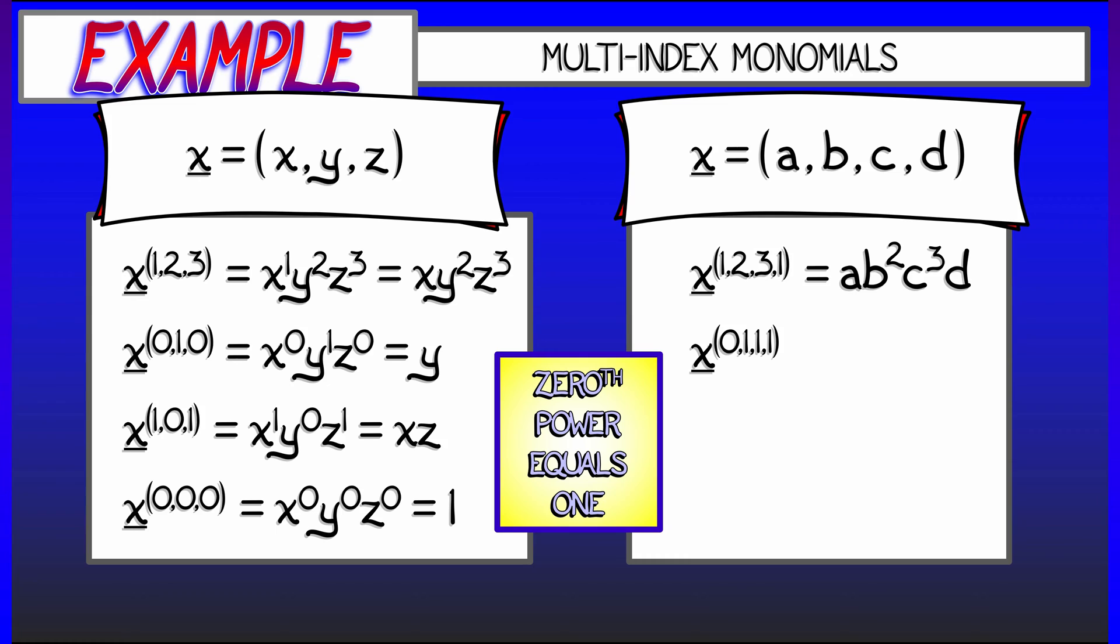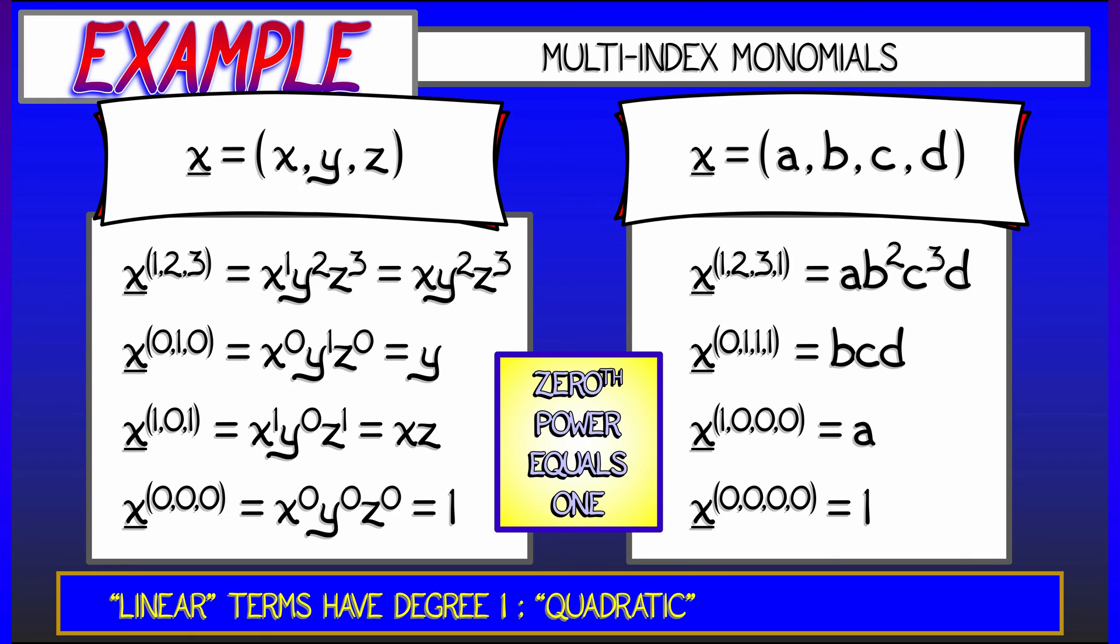x to the (0, 1, 1, 1), you can figure that out. That's just b times c times d. x to the (1, 0, 0, 0) is simply a. And again, x to the, everything is 0 is just 1. Now, what are the degrees of these? Can you figure that out? Linear terms have degree 1. Quadratic terms have multi-index degree 2, etc. That works really nicely.